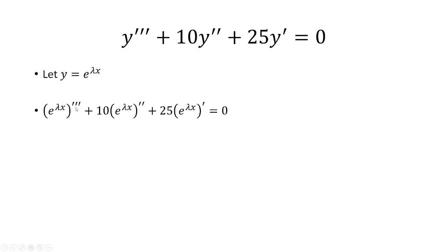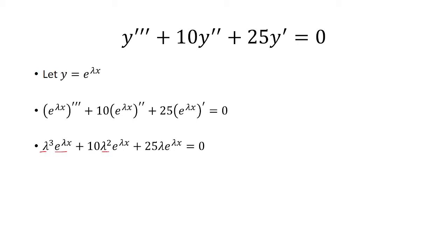So we have to take the triple derivative, double derivative, and first derivative. The triple derivative is lambda cubed times e to the lambda x, plus 10 lambda squared e to lambda x, plus 25 lambda times e to lambda x, equals zero. Notice that each term has a lambda e to lambda x factor, so we can pull that out.